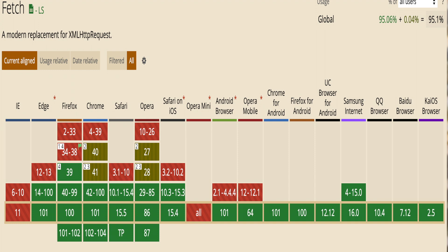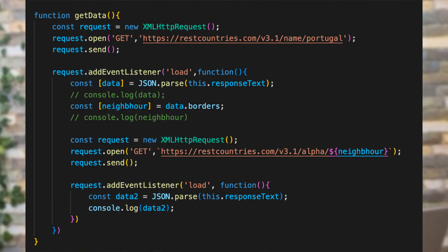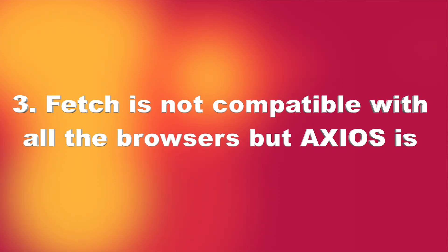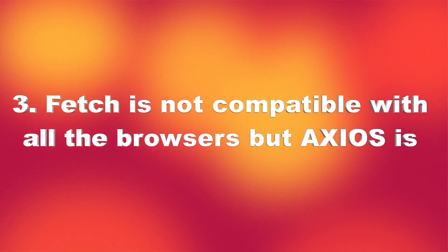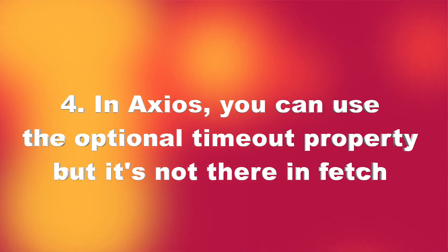The third difference is that Fetch is not supported in IE and only works in newer browser versions. Fetch was introduced later — initially there were XMLHttpRequests. Axios internally uses XMLHttpRequests, so Axios is compatible with all browsers, while Fetch is not. This is one of the major differences.